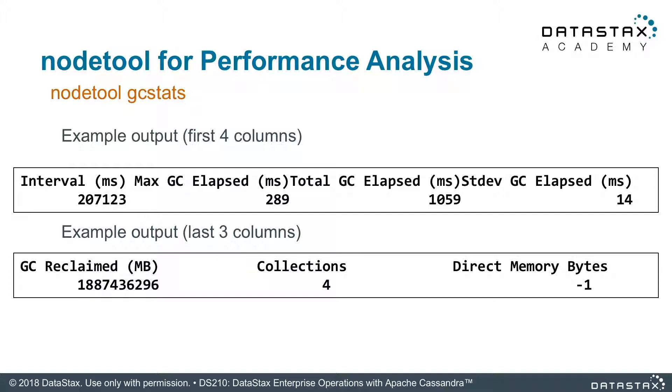If garbage collection is a big problem, it will ruin your node, so these are the numbers you need to be keeping an eye on. If these numbers are staying low, you're all good. But again, this is for whenever you have a bad situation and you're trying to figure out what's going on. If the node just randomly stops, this is a good place to look.